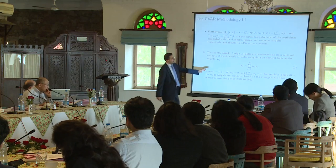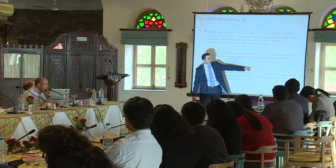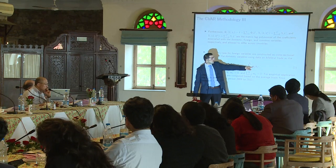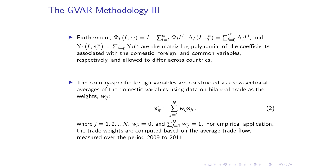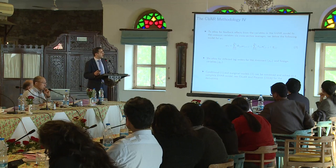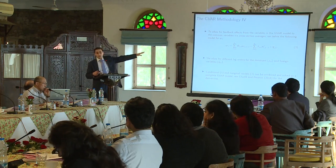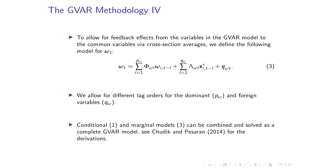Each country model has domestic variables — GDP, interest rates, exchange rates, equity markets, and so on — connected to foreign variables from corresponding trade partners. We also have a dominant global variable, which is our commodity unit and El Niño unit. We construct each country-specific foreign variable using trade weights from the 33 trading partners. For empirical applications, we average weights over three years to avoid distortions from any single year of unusually high trade with a particular country.